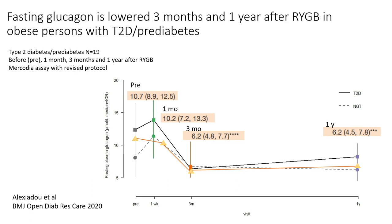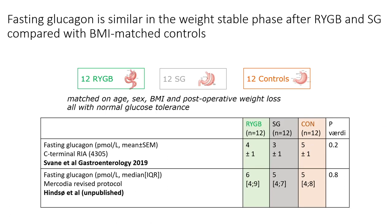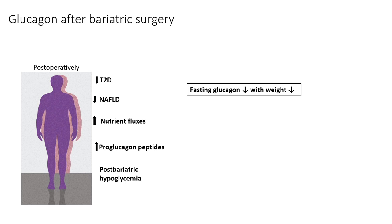What about fasting glucagon when we are in the weight-stable phase after surgery, and in sleeve gastrectomy patients? Here we have two studies with the same build-up: 12 gastric bypass patients compared to 12 sleeve gastrectomy patients and 12 controls, all matched on age, sex, and BMI, with the two surgical groups carefully matched one-on-one to postoperative weight loss. Taking weight out of the equation, we can't see any differences between the surgical groups compared with controls. So at least in the bariatric population, we have fasting glucagon going down with weight loss, but it takes a couple of months before it happens.